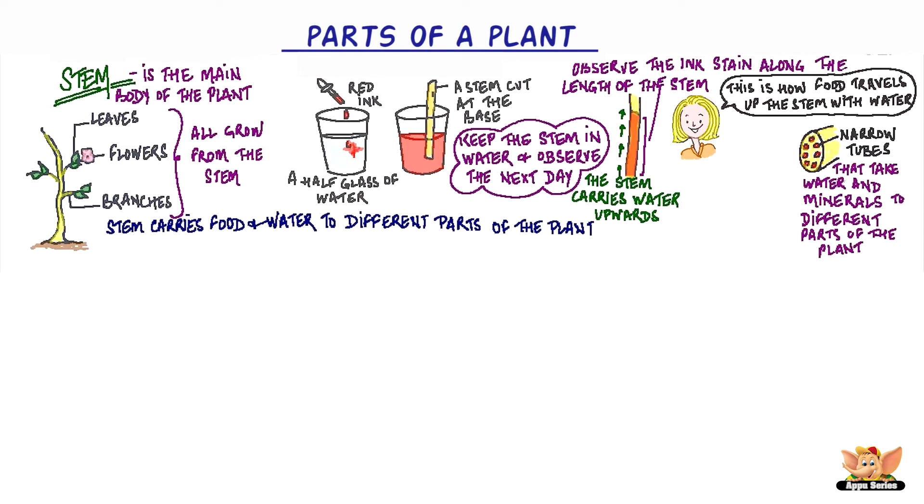You can see this if you cut the stem of the herb from the glass the next morning. You will find a number of red colored spots arranged in a ring inside the stem.